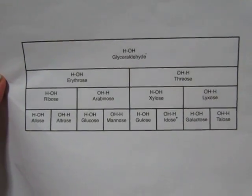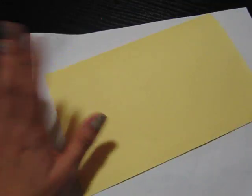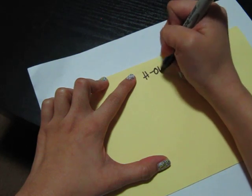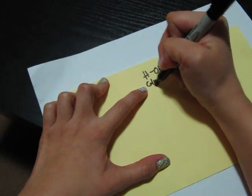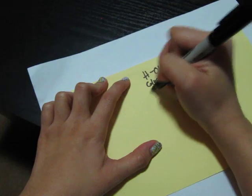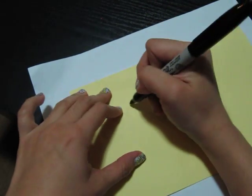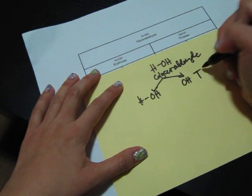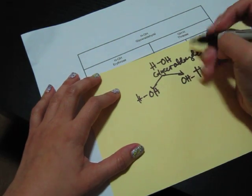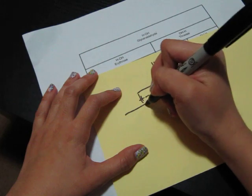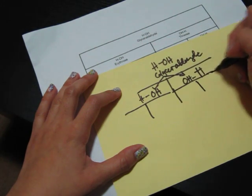Now I'll show you how to recreate it on the exam with scratch paper. You put the HOH of glyceraldehyde first — you know this is glyceraldehyde already, you don't have to write the name. Then that splits into two: it becomes HOH here for erythrose, and OHH for threose here.